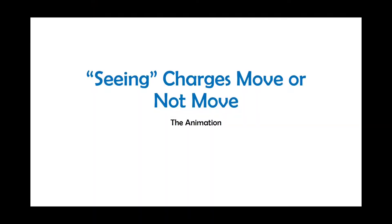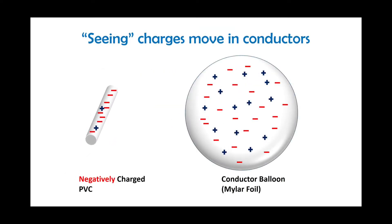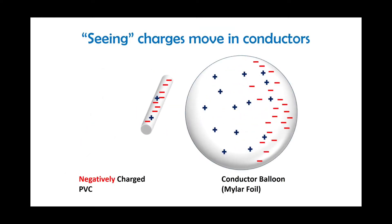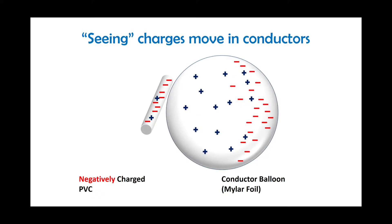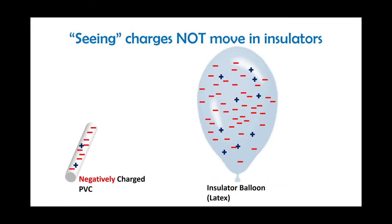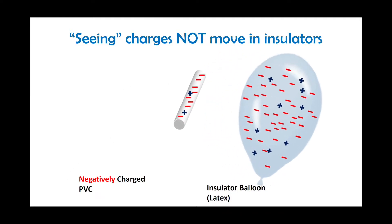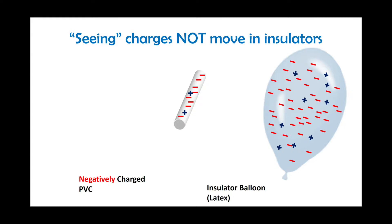Why would the positive one allow the latex to be attracted to it? Let's take a look at what the charge configuration looks like. The PVC pipe was negatively charged — it had an excess number of electrons, and we brought it near the conductor balloon. The electrons can move freely, so they move to the outside away from the PVC pipe, leaving the positive protons closer to the PVC pipe, which attracts them to the pipe. When we took the PVC pipe and brought it near the insulator balloon, those electrons cannot move and so they repel completely away from the negatively charged PVC pipe.